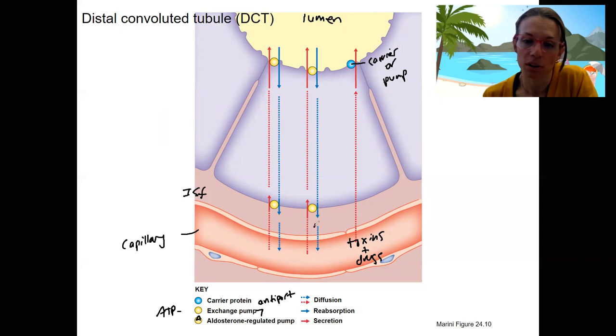We want to reabsorb sodium and we're going to secrete hydrogen ions. Regulate that pH. So same thing here: we've got sodium being exchanged for hydrogen. Great. And we saw this same mechanism before - these ATP pumps that exchange sodium and hydrogen ions.